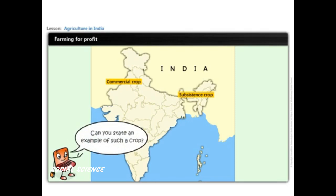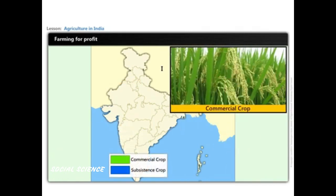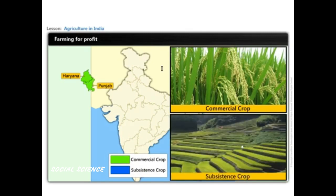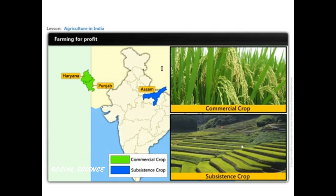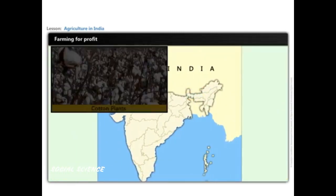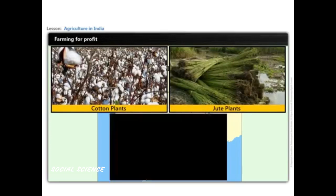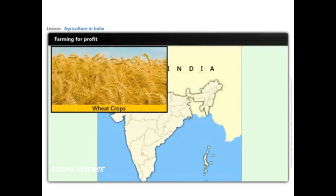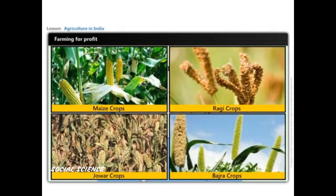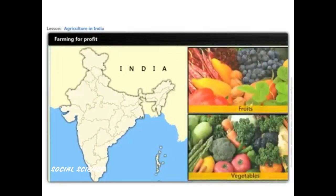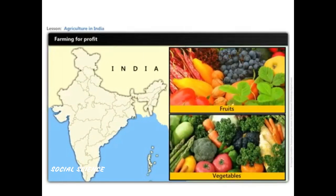For example, rice is a commercial crop in Haryana and Punjab but a subsistence crop in various parts of Assam. Some important commercial crops in India are cotton, jute, and oilseed. Other food crops like wheat, rice, maize, ragi, jowar, and bajra have become highly commercialized in some parts of India. Vegetables and fruit cultivation in different parts of India are also cultivated commercially.